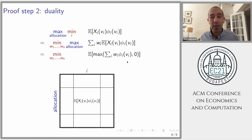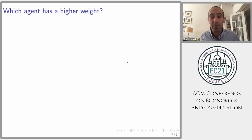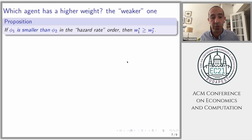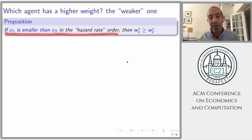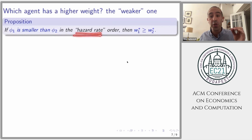At this point you can ask: what can we say about these weights? When are they high or low, and for which agents? An agent with a higher weight is one the mechanism pays more attention to in deciding the outcome. The answer is: the weaker agent gets the higher weight, as formalized in our proposition. The proposition says: if the virtual value of agent one is smaller than that of agent two in the hazard rate order, then agent one has a higher weight than agent two. I interpret this condition as saying agent one is weaker — having lower values overall — and the comparison is a stochastic order on the distributions of virtual values via their hazard rates.